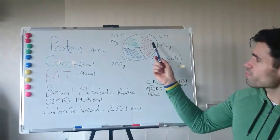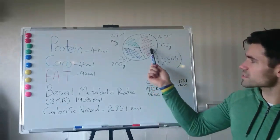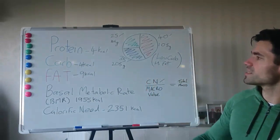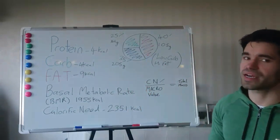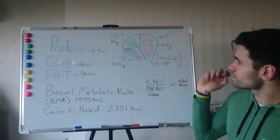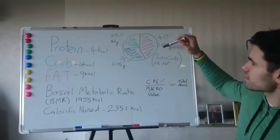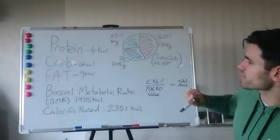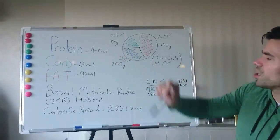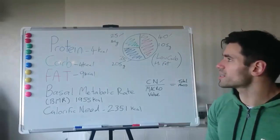So in this pie chart here, you can see that 40% of my diet is fat, 35% of my diet is protein, and 25% of my diet is carbohydrates. So with that, 40% of my diet means I can have 105 grams of fat, 205 grams of protein, and 146 grams of carbohydrates.